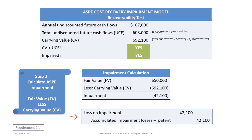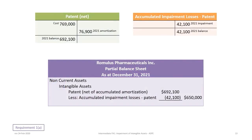To record the impairment, we debit Loss on Impairment of $42,100 and credit Accumulated Impairment Losses — Patent of $42,100. We can then show what this looks like on the balance sheet. Starting from the original cost of $769,000 spread over 10 years, one year's amortization is $76,900, giving a carrying value of $692,100. After the journal entry, the Accumulated Impairment Losses — Patent account has a balance of $42,100.